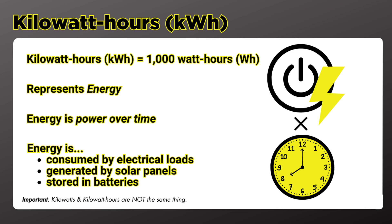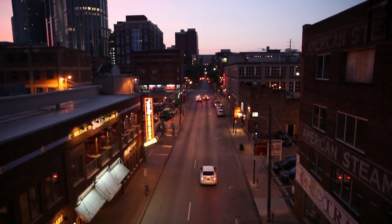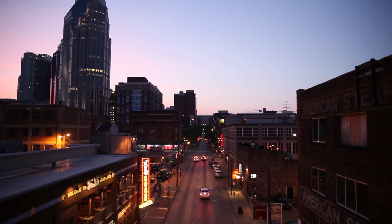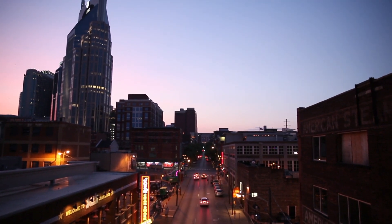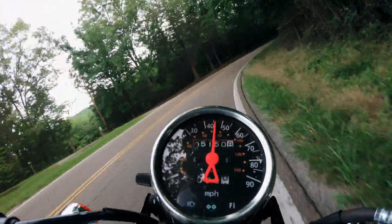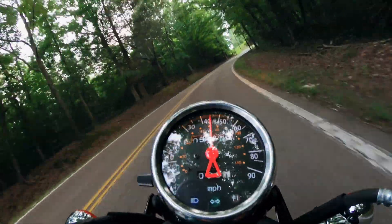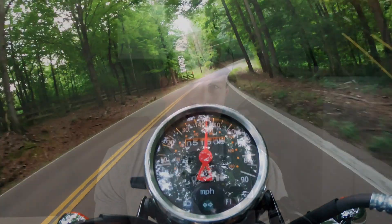Now this takes us to our car analogy. The summary of this is: miles per hour equals kilowatts, and miles driven equals kilowatt hours. Think of kilowatts or wattage like horsepower or top speed — basically how much power is either being output or drawn at that moment. I'm gonna stick with speed for this example since we use that way more often in our day-to-day.